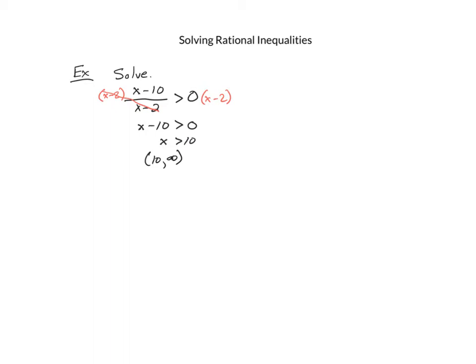From that, we get x is greater than 10, giving the interval from 10 to infinity as the solution. That means numbers like 11, 12, or 300 would be solutions, and any number smaller than 10 like 5, 0, or negative 13 should not be solutions. But suppose we choose 0 and substitute it in — 0 is not in this interval, so 0 should not be a solution.